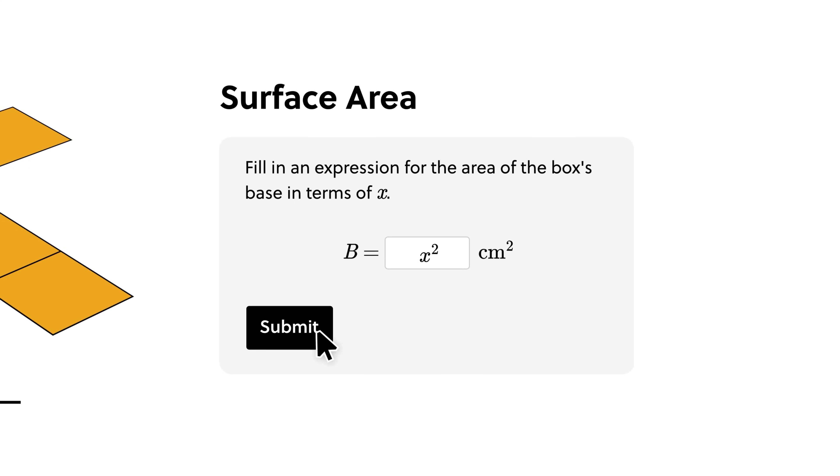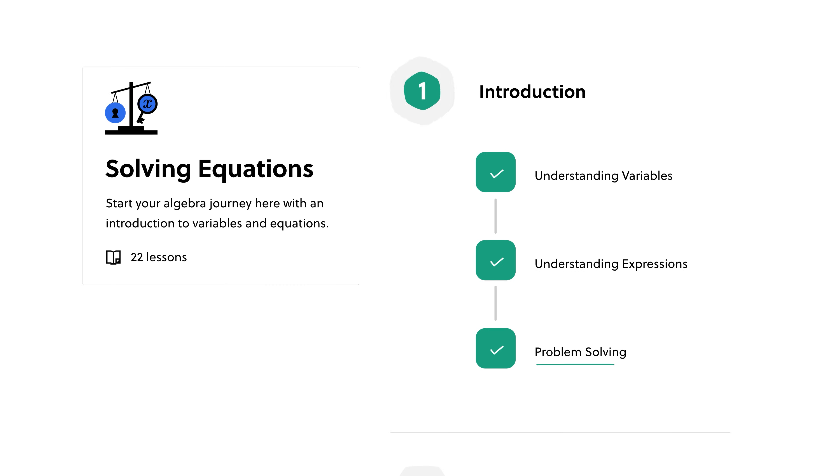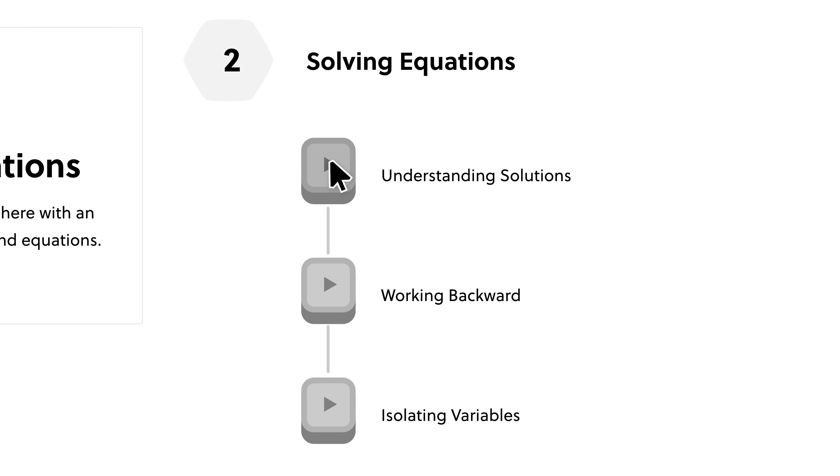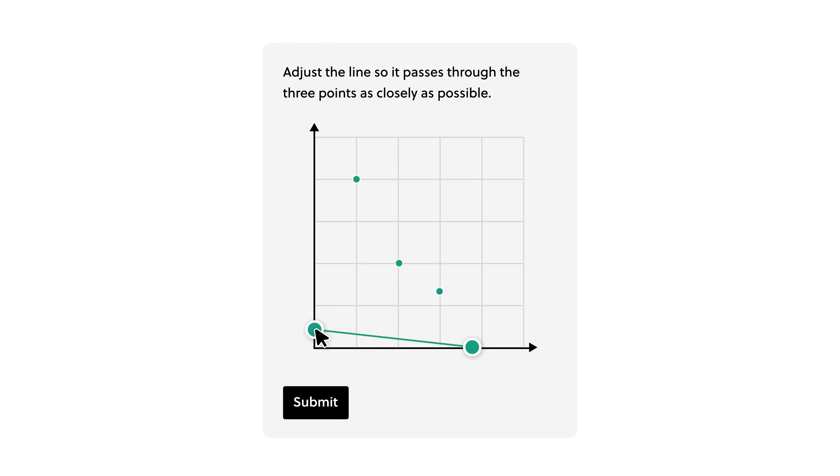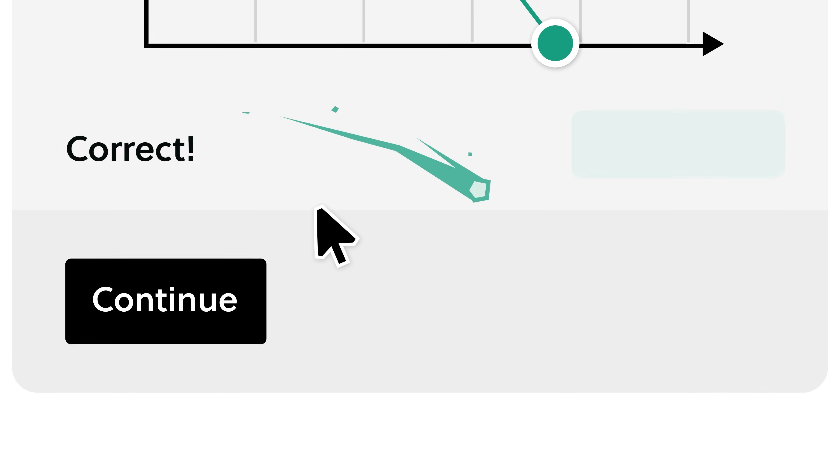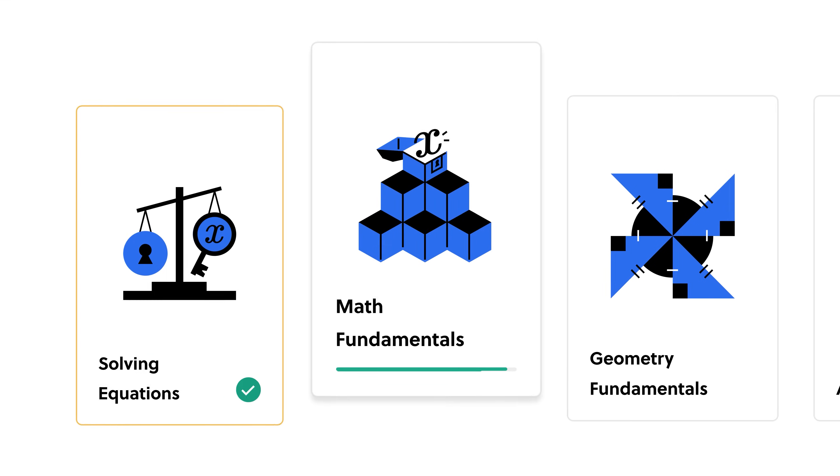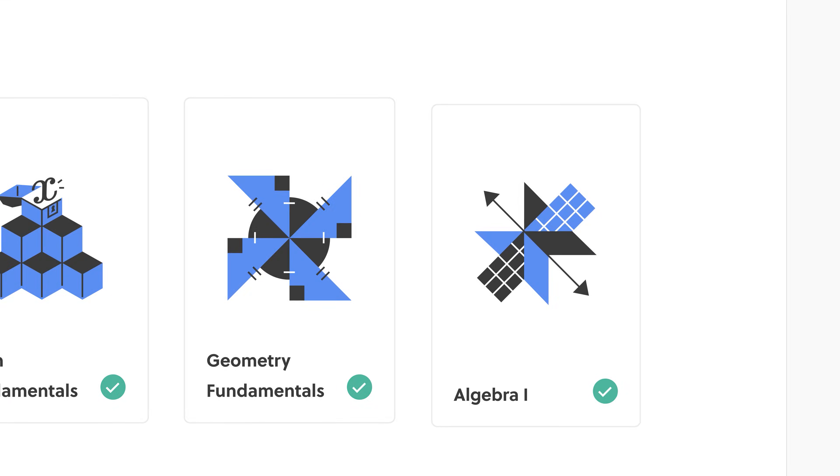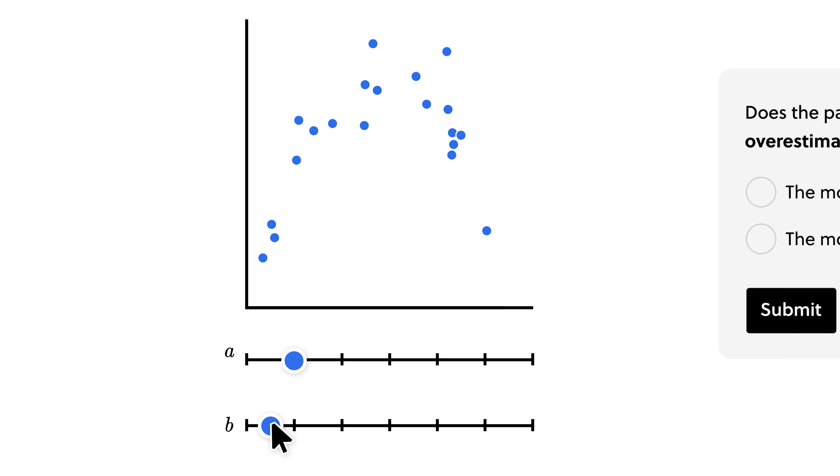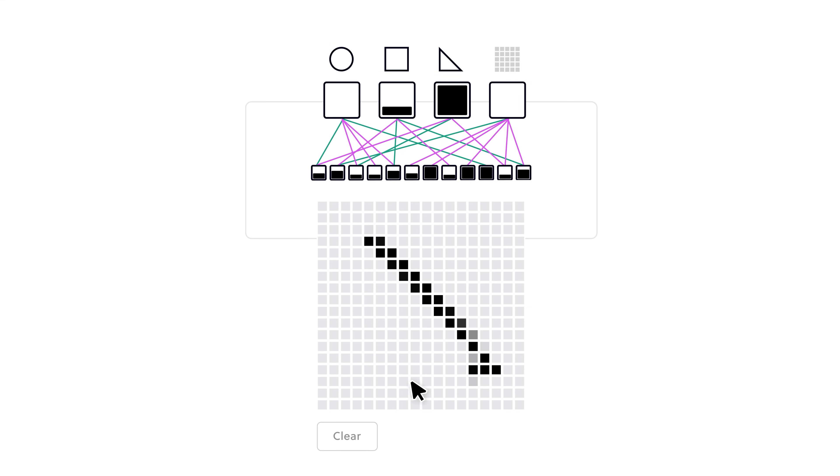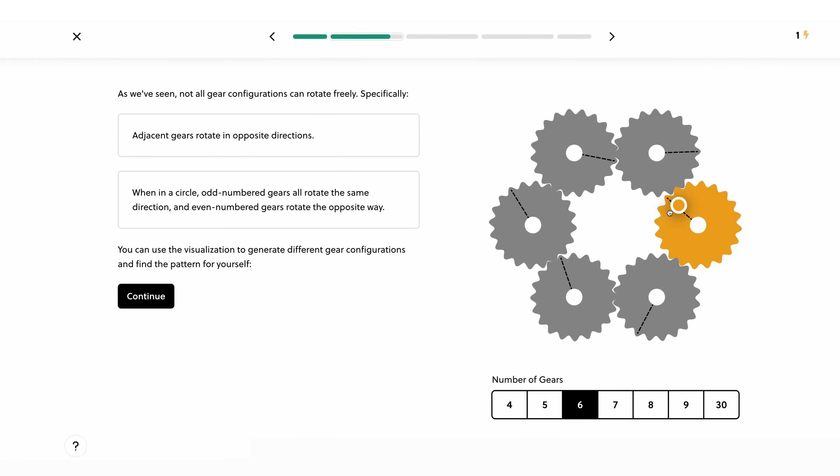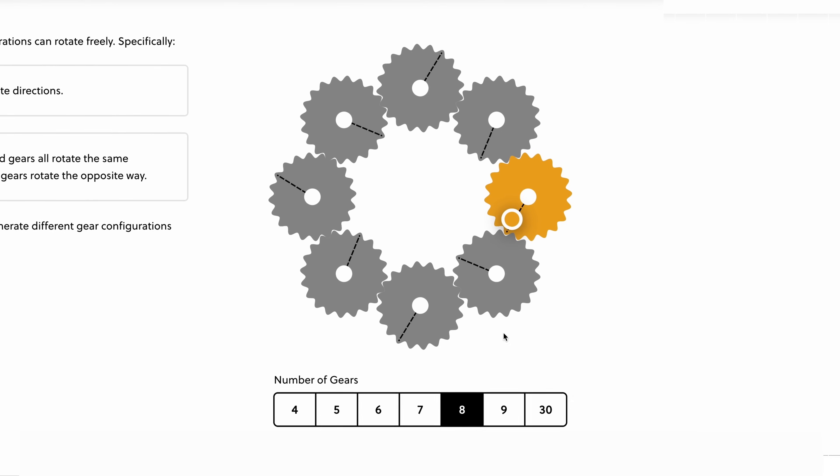What sets Brilliant apart from anyone else is they have interactive lessons that are actually fun to do. I often get bored in a lot of my classes, but these lessons from Brilliant are actually hands-on, and really help to visualize what I'm learning. I also get to track my progress, and I feel accomplished each time I complete a new lesson. There are so many categories to choose from, you would never run out of anything to learn.